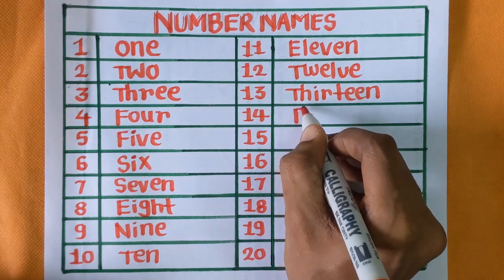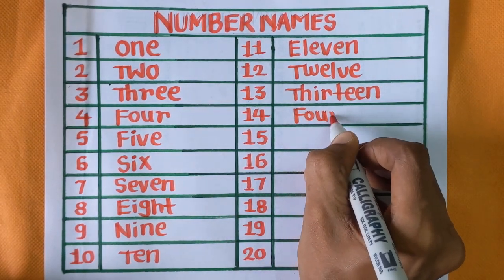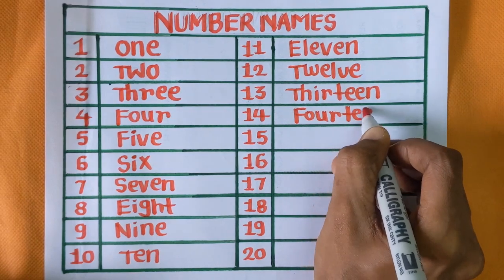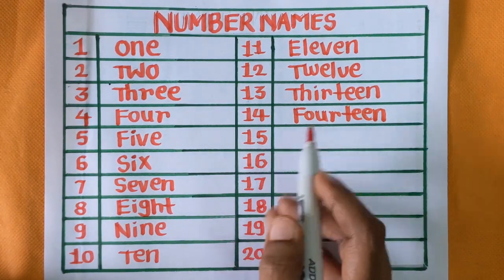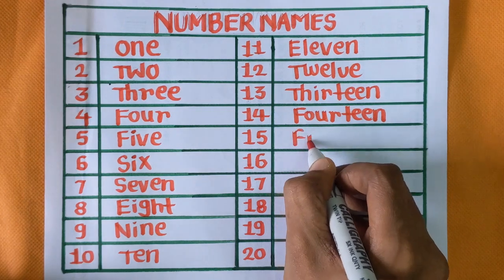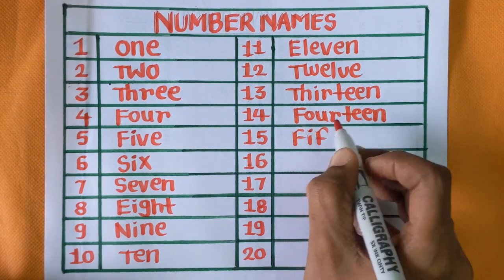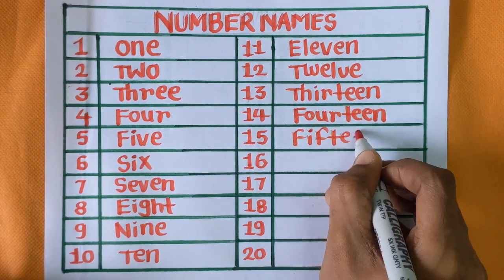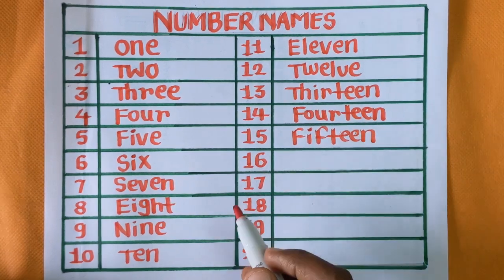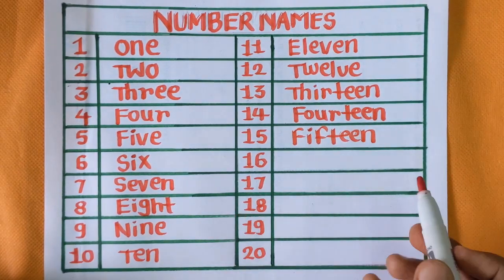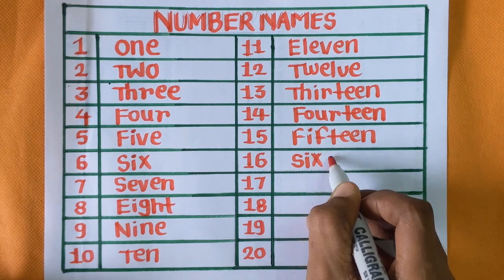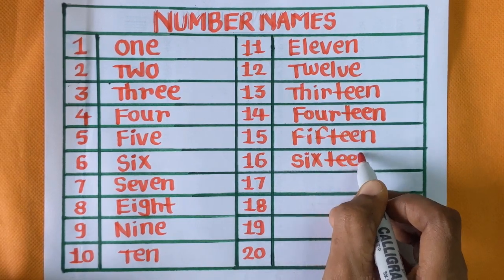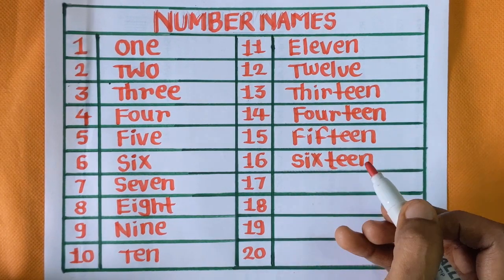Fourteen, F-O-U-R-T-E-E-N, fourteen. Fifteen, F-I-F-T double E-N, fifteen. Next number is sixteen, S-I-X-T double E-N, sixteen.